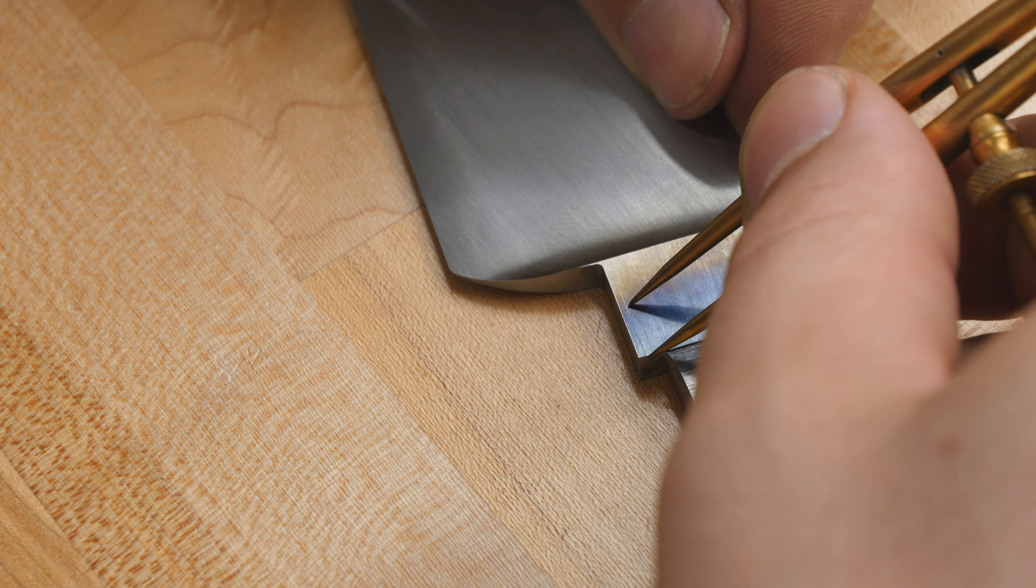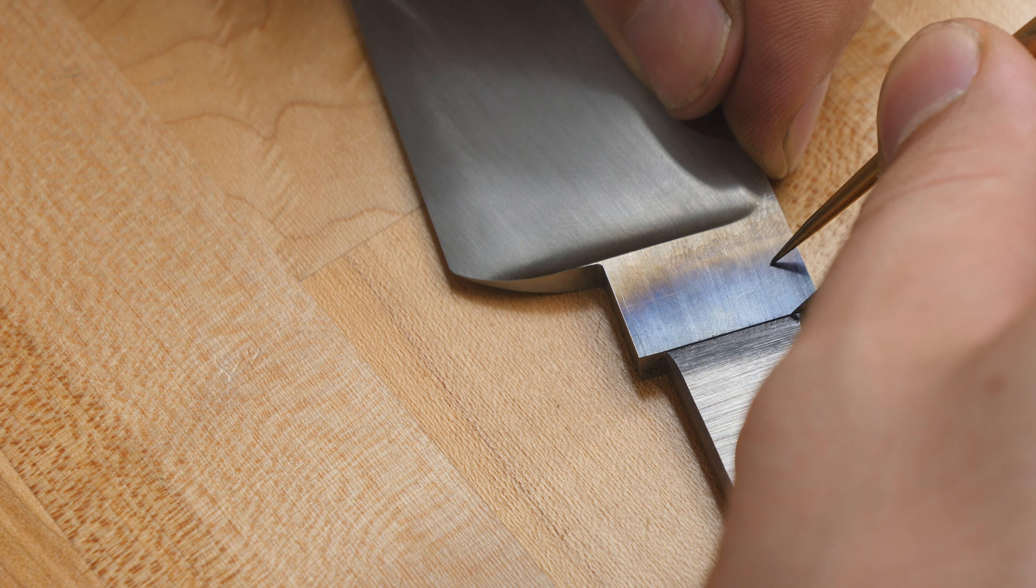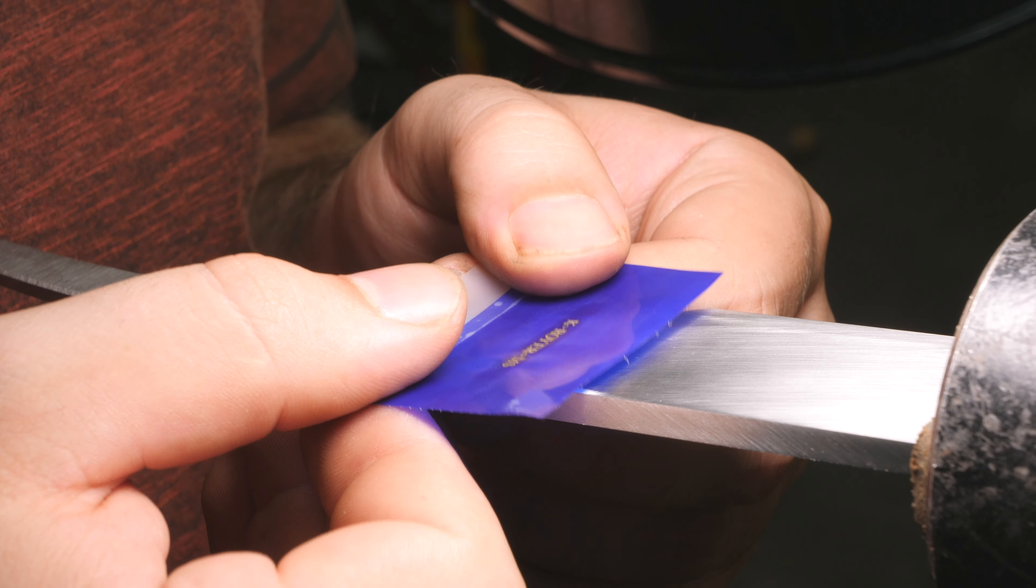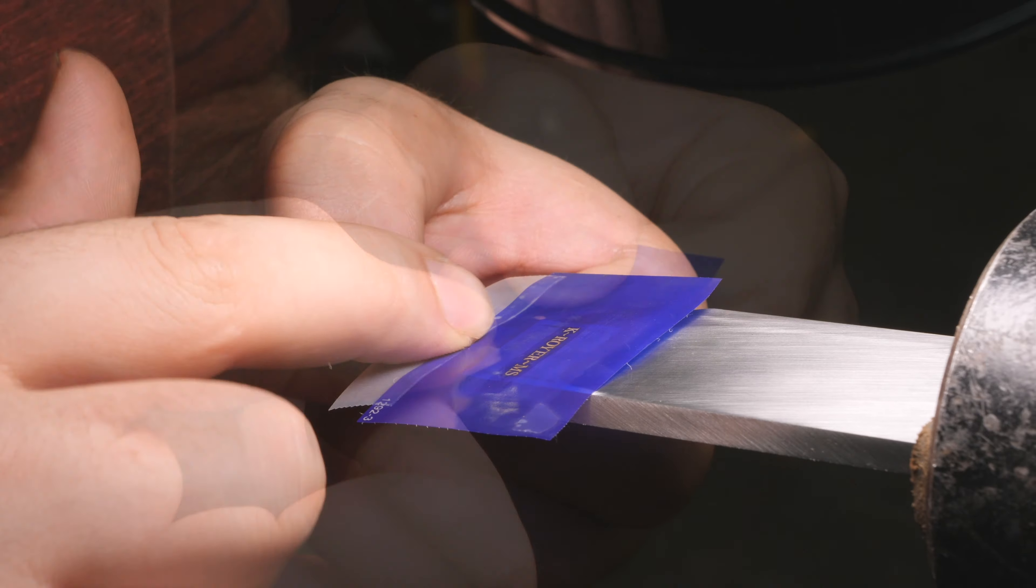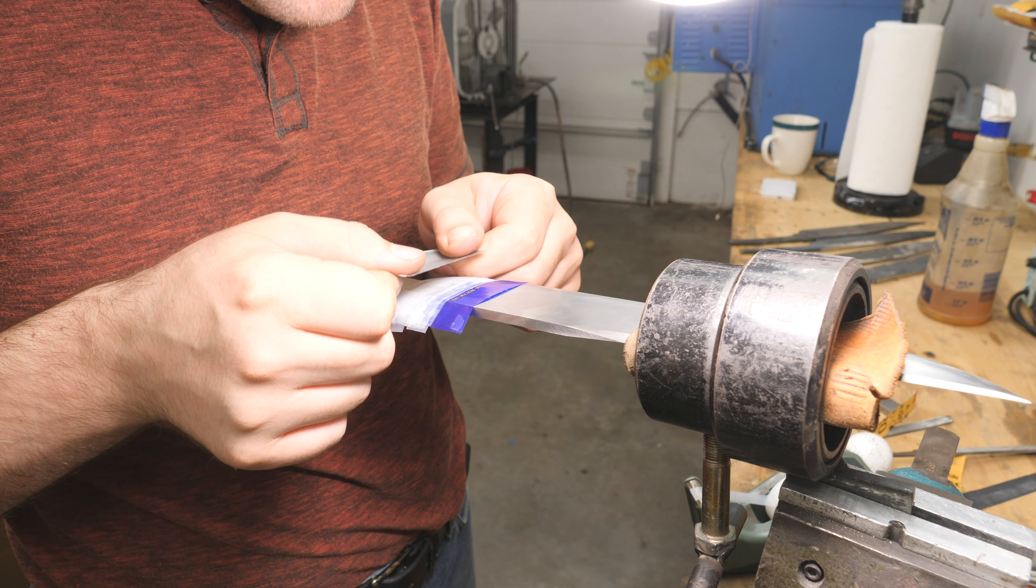I start laying out lines on the ricasso for my maker's mark. You want it to be nice and square and centered on the ricasso. If you put the stencil in the wrong place or it's not square anymore the only way to get rid of it after you've etched in your mark is to grind your whole blade thinner.